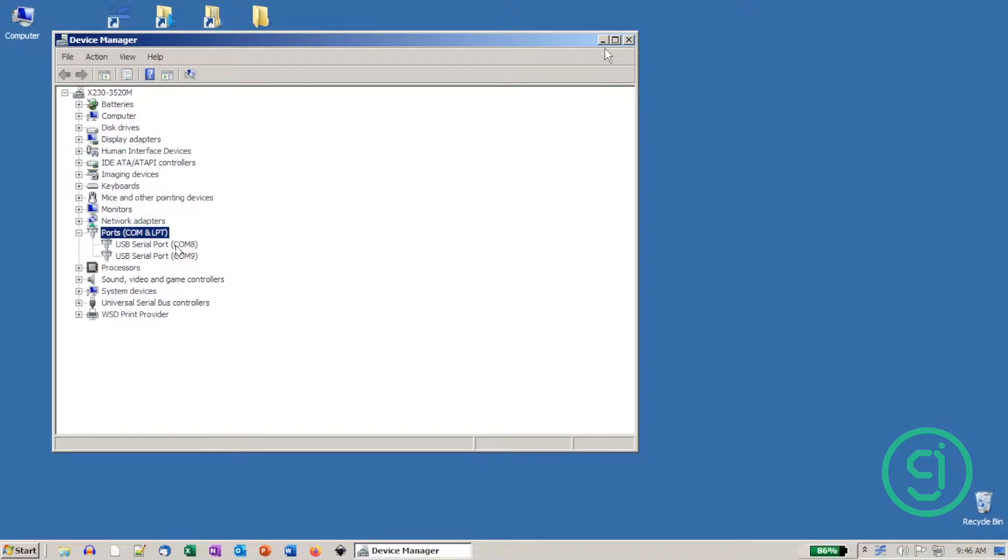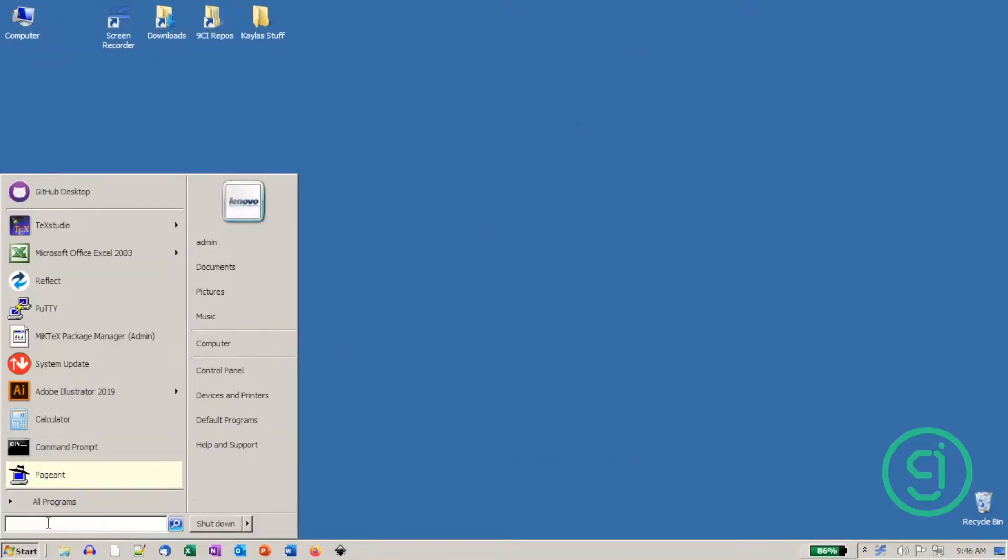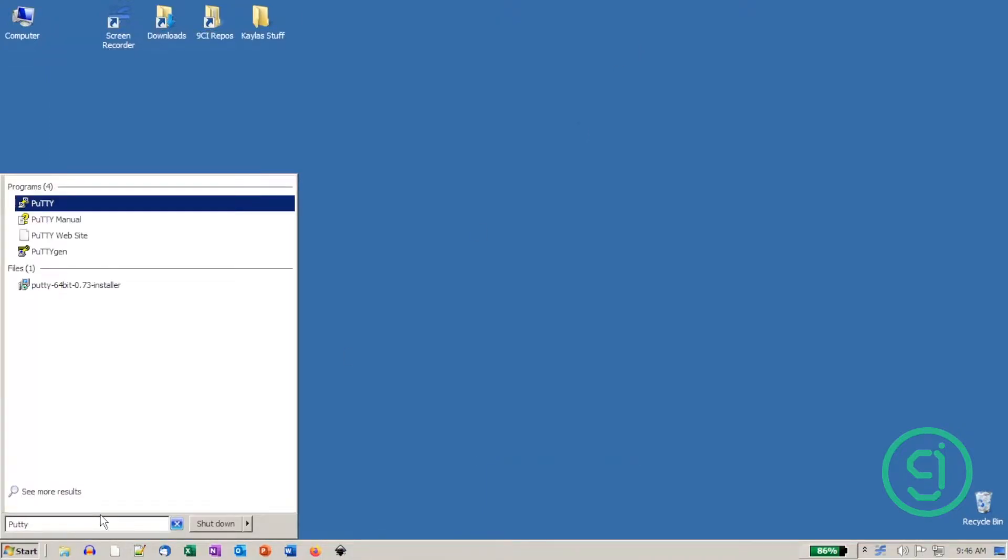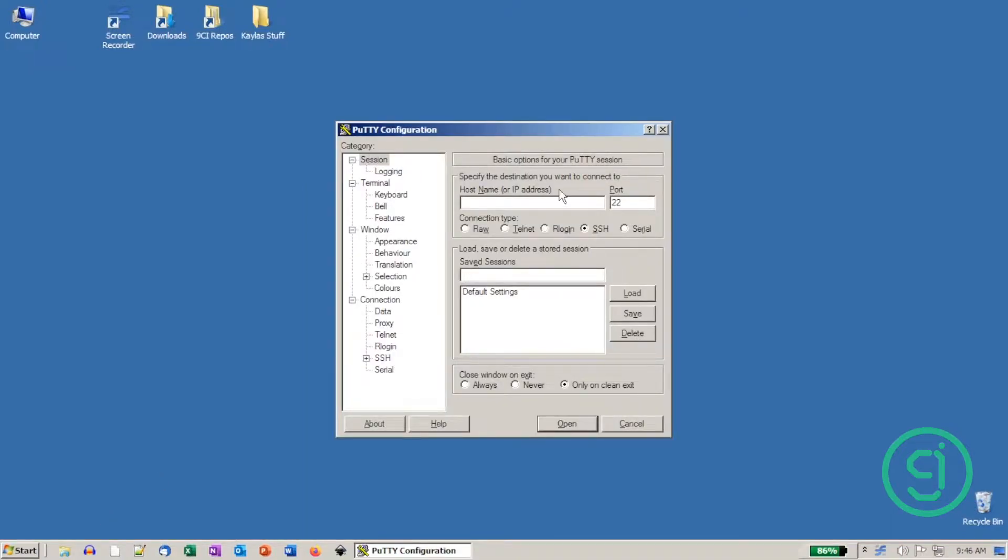You can close the device manager and go to the start menu, and then open your hyper terminal. We are using PuTTY. In the session tab, click serial and change the comm to the number of one of your USBs.